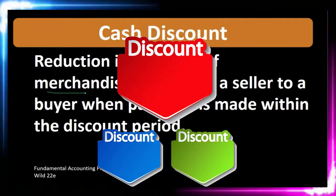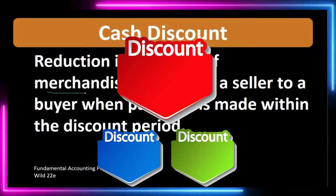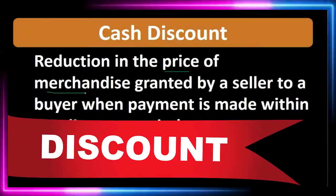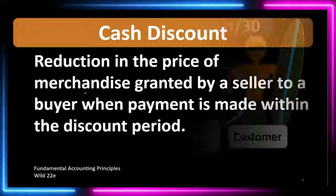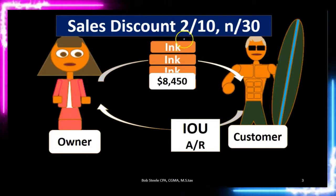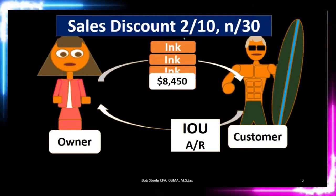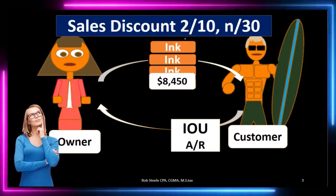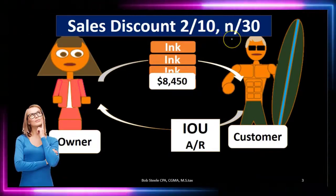The reason for the reduction of price is because it was paid within a certain time period — that time period being set up so that it can generally increase the cash flow of a business. For example, we might have a sale with a term such as 2/10 n/30, meaning we'll give a 2% discount if it's paid within 10 days, otherwise it's paid within 30 days.